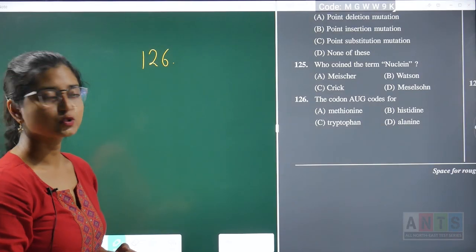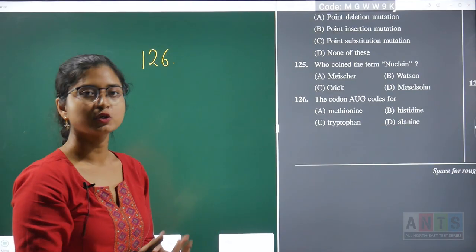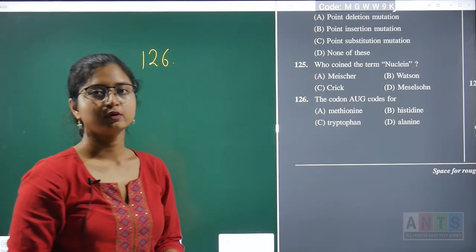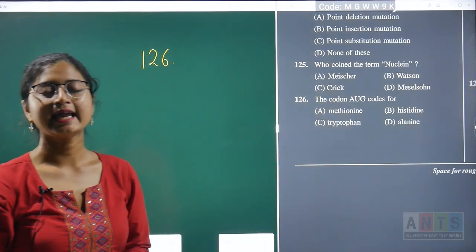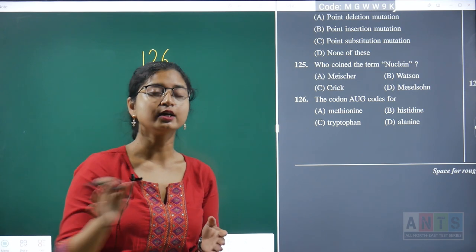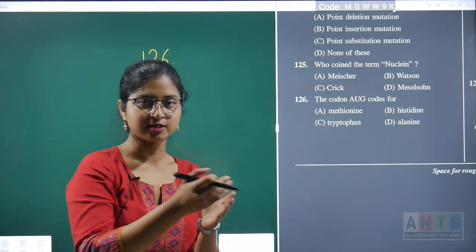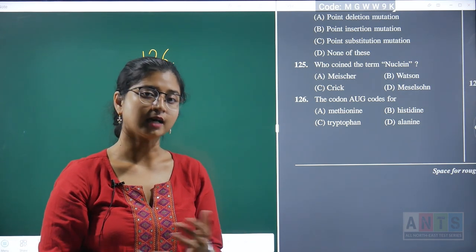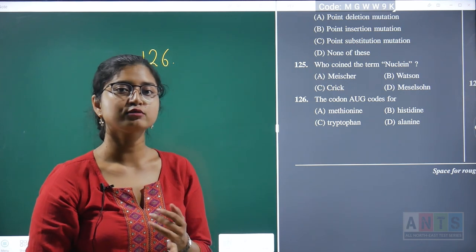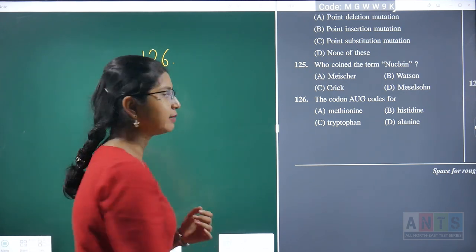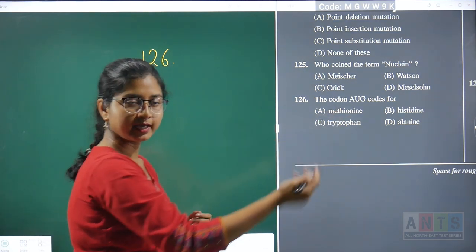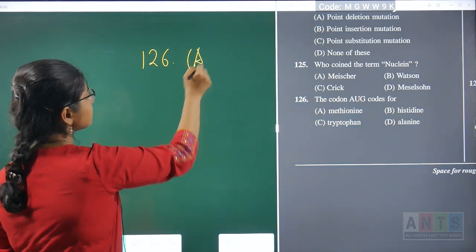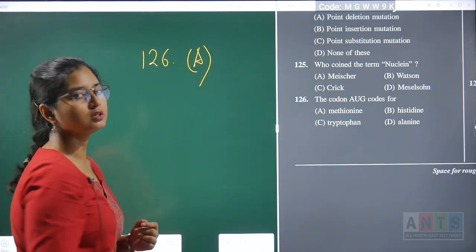Question 126: the codon AUG codes for — AUG is considered the start codon, where translation begins. Along with being the start codon, AUG also codes for the amino acid methionine. Hence, question 126's correct answer is option A.